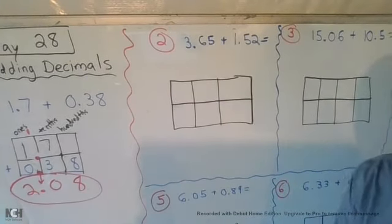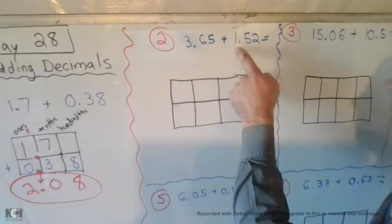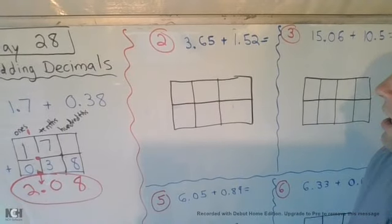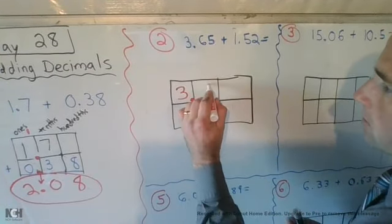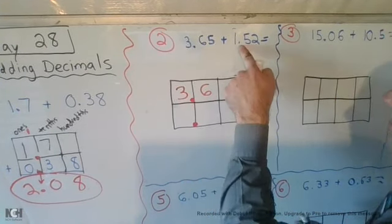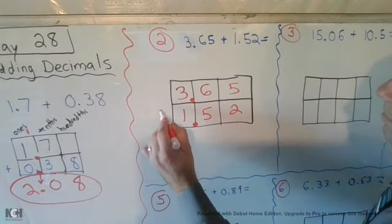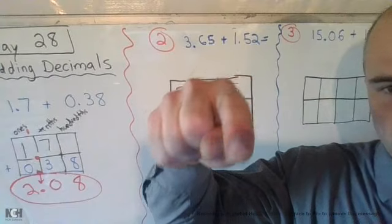Number 2, we have 3 and 65 hundredths plus 1 and 52 hundredths. So, I'm going to stack them on top of each other. Making sure I line up my decimal places. There's a decimal. There's a decimal. And now you go ahead and add them together by hitting the pause button now.